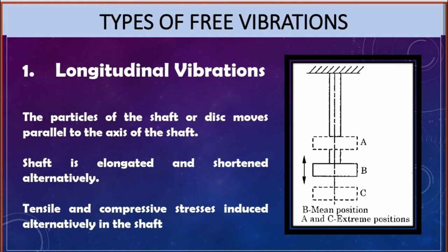Longitudinal vibrations: in longitudinal vibrations, the particles of the shaft or disc move parallel to the axis of the shaft. The disc's initial position is at B. When there is elongation, particles move to position C; when shortened, particles move to position A — both positions are parallel to the axis. The shaft is elongated and shortened alternatively, inducing tensile and compressive stresses alternately in the shaft.